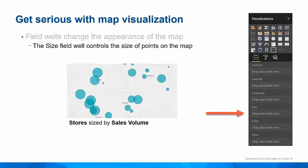You can use the Size and Color field wells to change the look of your data on the map. The Size field well can be used with numerical data fields, and it adjusts the size of locations visualized as points. Small data values will be shown by small circles, and large data values will be represented by large circles. I've sized my store locations by sales volume so I can quickly see high and low performing stores.